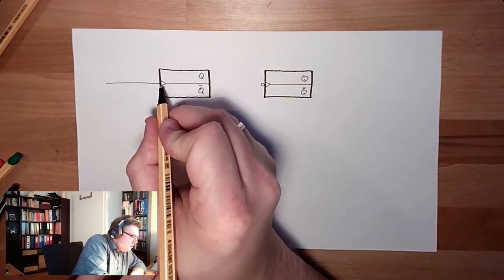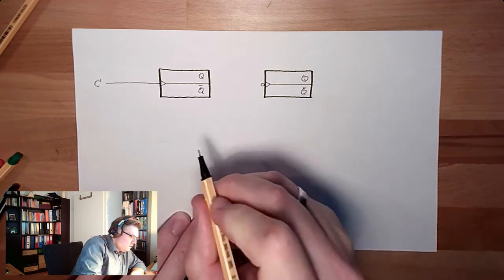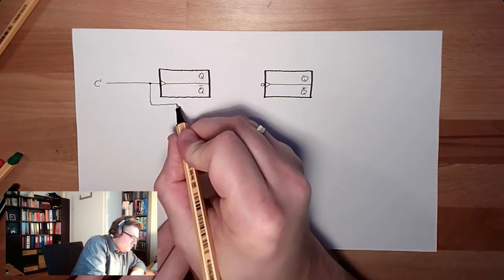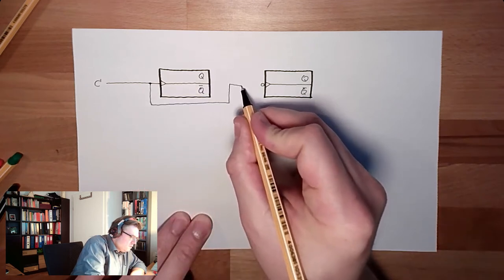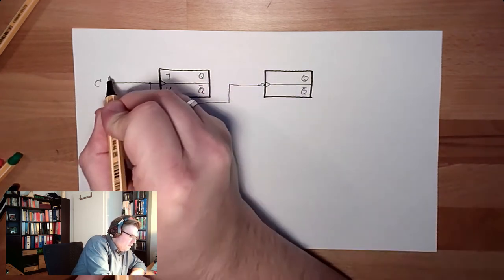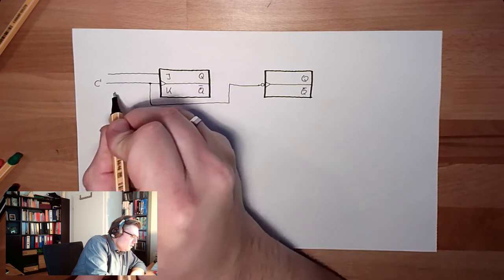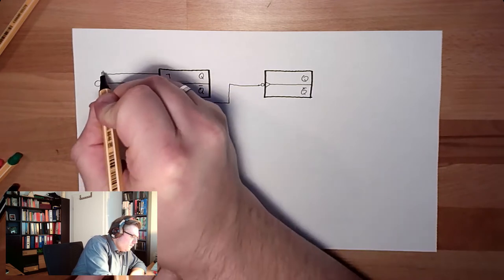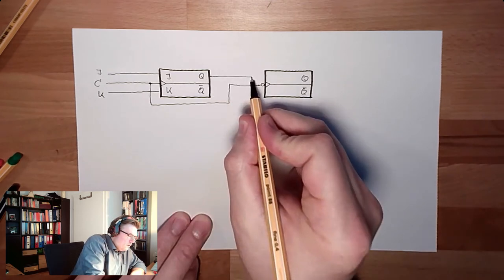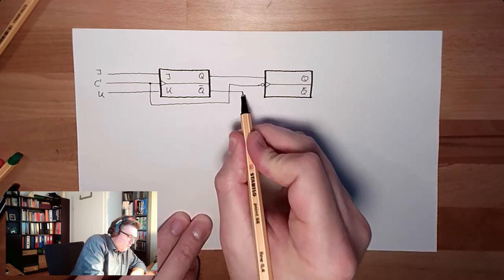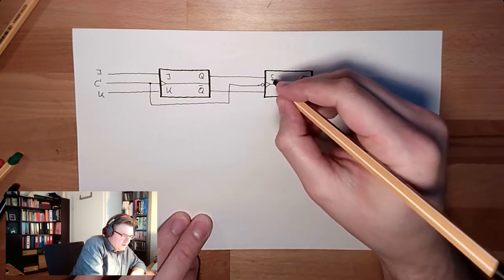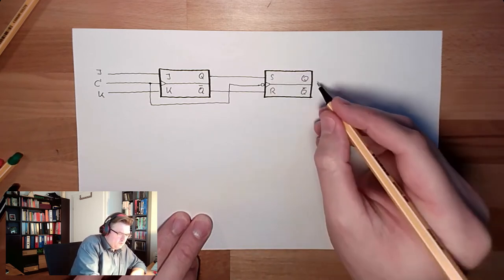So there is the C and this C is also triggering the slave. JK, and here we go directly through. If this is a JK or an SR, it doesn't really matter. It would work in both ways.